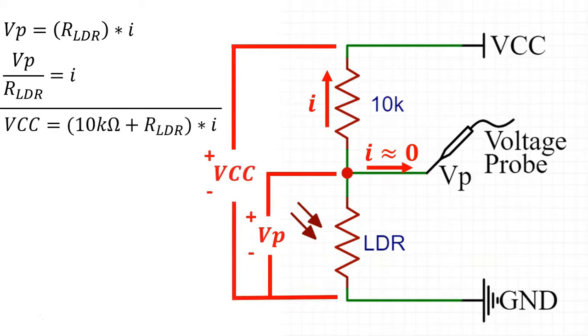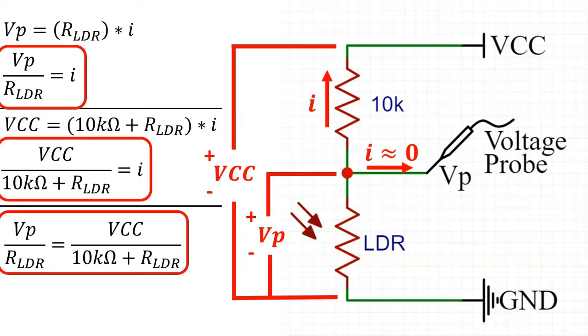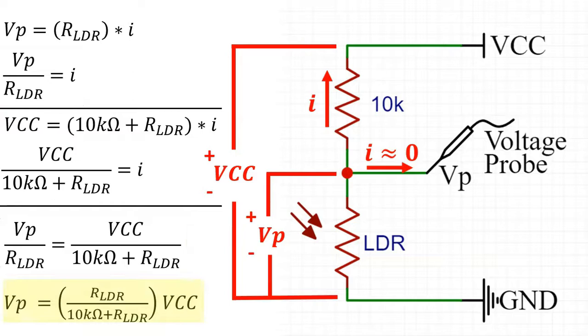Now if we measure the voltage VCC relative to ground we can also determine the equation equals the current flowing through both the 10k resistor and the LDR. We can rearrange this and we'll get VCC divided by the two resistances in the denominator gives us the same current. If we take these two we can set the left hand side of both equations equal to each other and rearrange to get that VP equals the resistance for the LDR divided by 10 kilo ohms plus the resistance of the LDR multiplied by whatever we put in VCC.